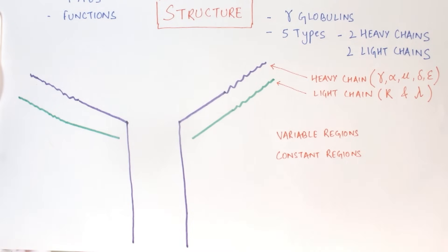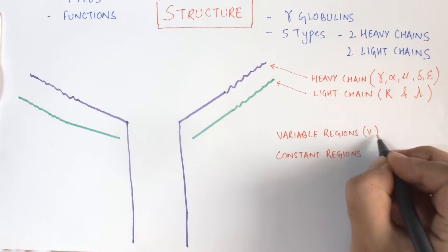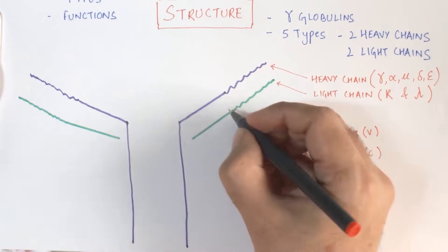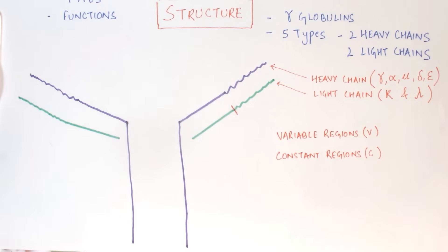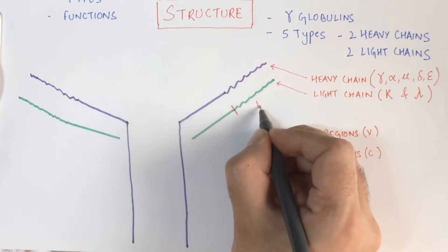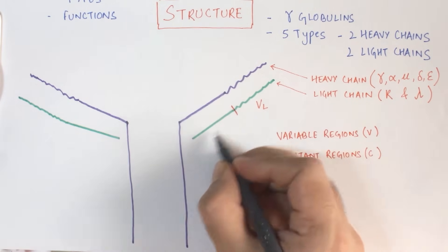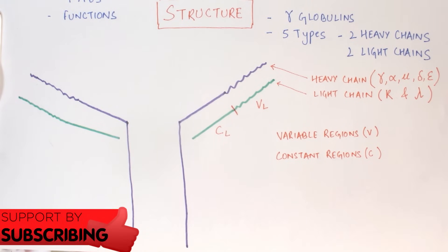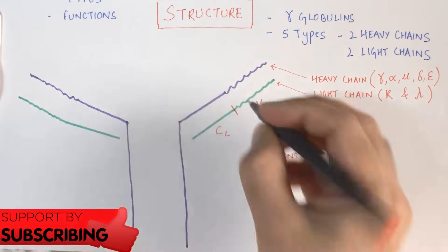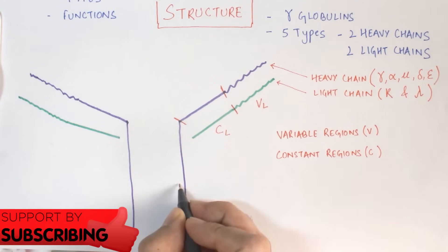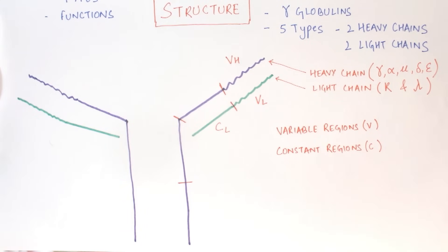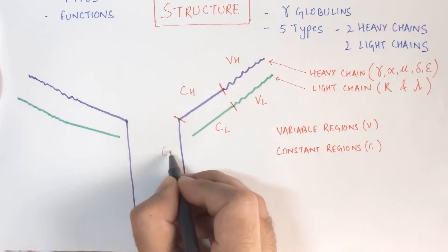On each heavy and light chain there are variable regions and constant regions. The variable regions are denoted by the letter V, whereas the constant regions are denoted by the letter C. On the light chain there are two parts — the distal wavy part is the variable region and the proximal part is the constant region. The heavy chain is divided into four parts: the distal one-fourth is the variable region, and the proximal three parts are the constant regions numbered one, two, and three.